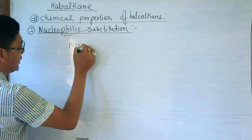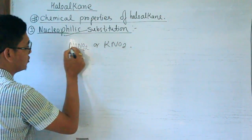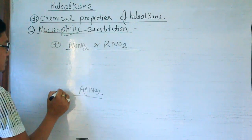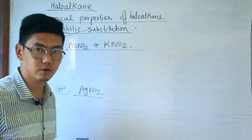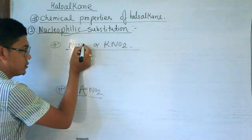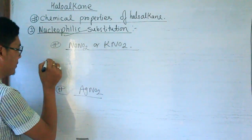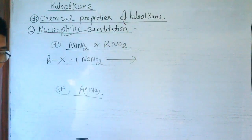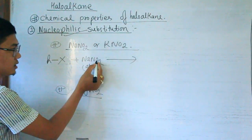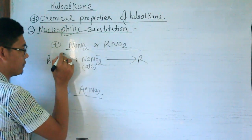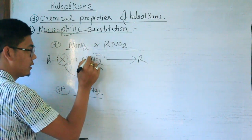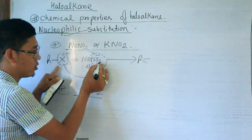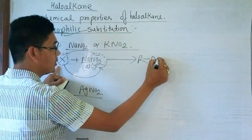NaNO₂ (sodium nitrite), KNO₂ (potassium nitrite), and AgNO₂ (silver nitrite) are also ambident nucleophiles. The NO₂⁻ ion can attack through either nitrogen or oxygen. When haloalkane reacts with NaNO₂ in alcoholic conditions, the nitrogen or oxygen end of NO₂⁻ attacks.